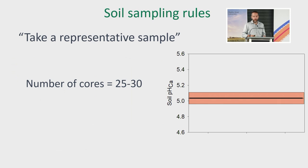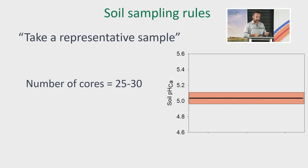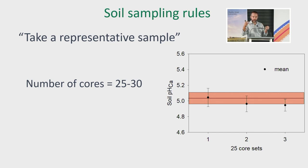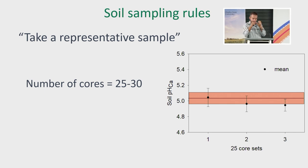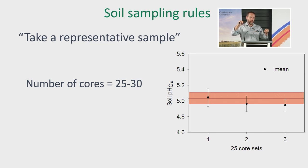Now, the recommended thing to do is take 25 to 30 cores, bulk those cores, and send that sample off to the lab. If you take 25 of those sites and average them — I'm going to do that three times, along the X axis, one, two and three — that's like taking three 25-core samples from the one paddock. Do it once, 25 cores. But if you did it three times, there are your three possible outcomes by random chance. You can see that all the black dots, the means of those 25 cores, all fit within that pink band. So taking 25 cores randomly and averaging them by bulking together gives you a number from the lab that fits within the band of reality — a representative sample.